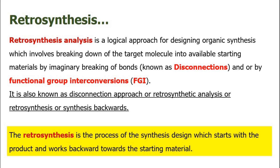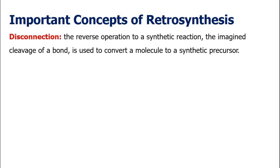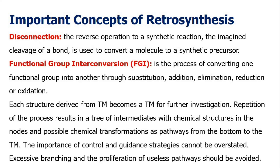Now we will discuss some important concepts involved in retrosynthesis. The foremost concept is disconnection — the reverse operation of a synthetic reaction, where cleavage of a bond is used to convert a molecule to a synthetic precursor. The second important concept is functional group interconversion, where one functional group is converted into another by means such as substitution, addition, elimination, reduction, or oxidation.